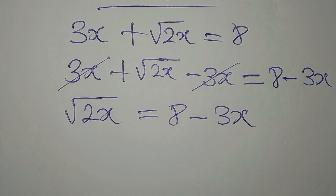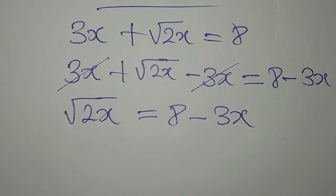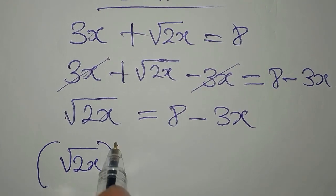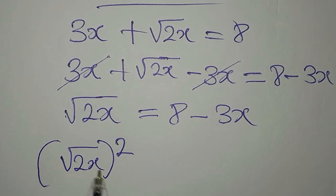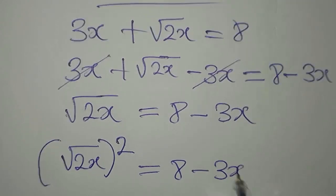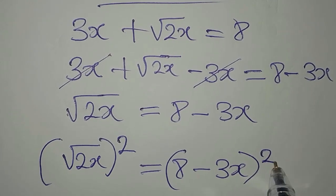The next target is to remove this root. To remove it, we'll square everything. We'll square root 2x on the left, and the square will reflect on the right.